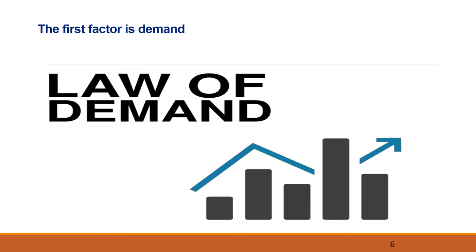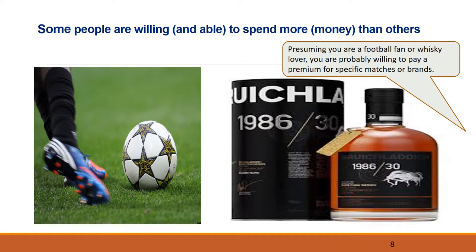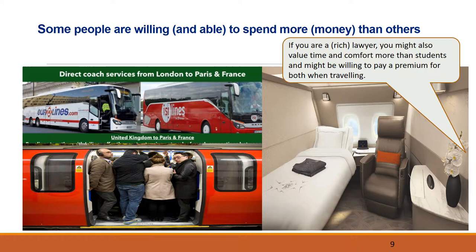The first important factor when companies are pricing their products is demand — that is essentially you and your willingness to buy the product. It's essential to understand that consumers are different in respect to their willingness to pay for a product or service. Some people are unwilling or unable to spend money in general, while others have preferences for products or simply spend more. Presuming you're a football fan or a whiskey lover, you are probably willing to pay a premium for special matches or brands — prices which others not sharing your preferences would be unwilling to even consider. If you're a rich lawyer, you might also value time and comfort more than a student and may be willing to pay a premium for both when traveling. This essentially explains why planes and trains offer different levels of comfort on the same flights, and hotels have different room grades.